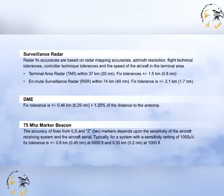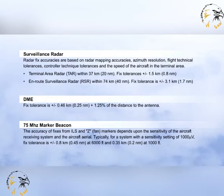Whilst using instrument approach procedures, you will often be using reporting positions and turning points that have been referenced to navigational facilities. For example, when leaving airways, you may be given radar vectors to a point that initiates the start of the arrival route. ILS systems use outer and middle markers that operate on 75 MHz, and some NDB approach procedures utilise these markers. The accuracy of these systems is shown here.